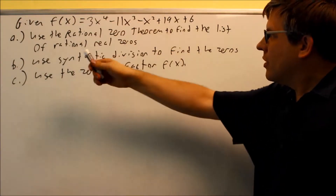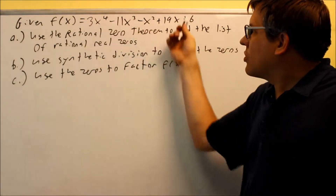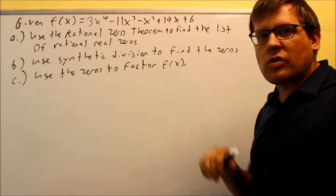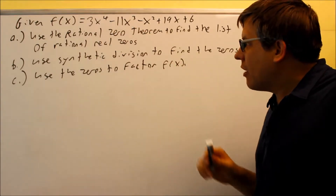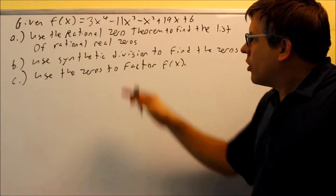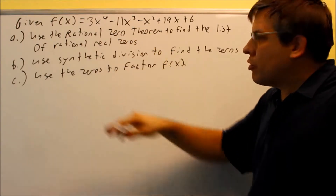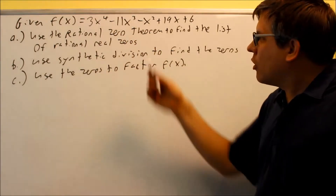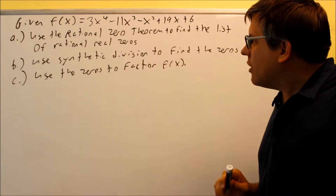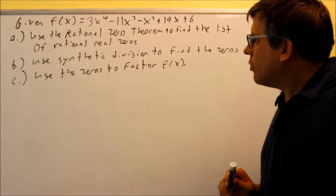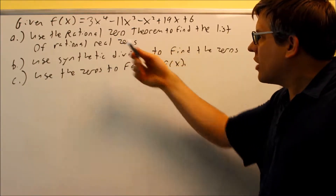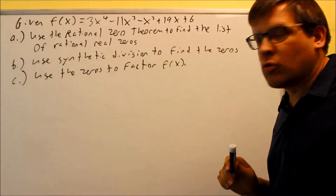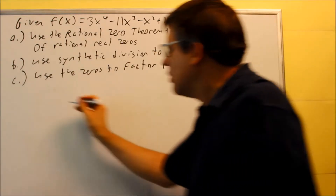Here's another one. f of x is given as this, and notice this time we have a fourth power on that. We're going to do the same three parts as before. For Part A, we want to find the rational zero theorem and use that to find those rational real zeros.